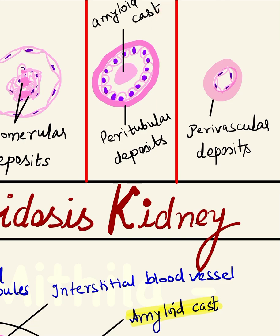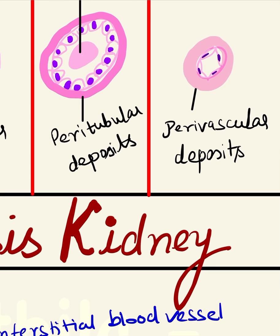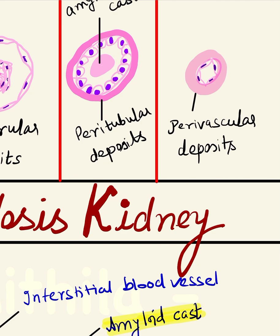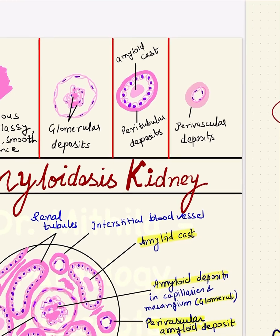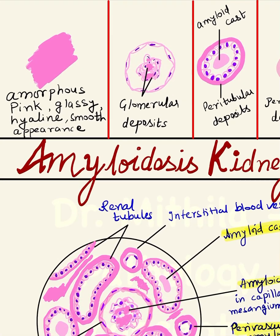The next site of deposit is the perivascular area — around the arterioles and arteries. To draw this, you make the endothelial lining of the vessel, lined by spindle-shaped cells having an elongated nucleus, and surrounding it you make the amyloid deposit. This is again a pink hyaline deposit around the blood vessel. These vessels lie in the interstitium.